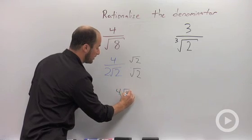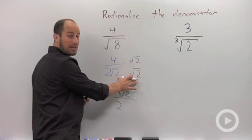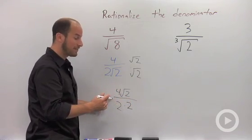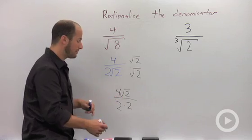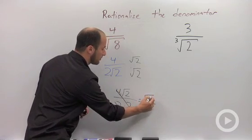Our numerator becomes 4 root 2. Our 2 is still there and then we have root 2 times root 2 which is just 2. You can simplify this up. 4 over 2 times 2, they all cancel, just leaving this with the square root of 2.